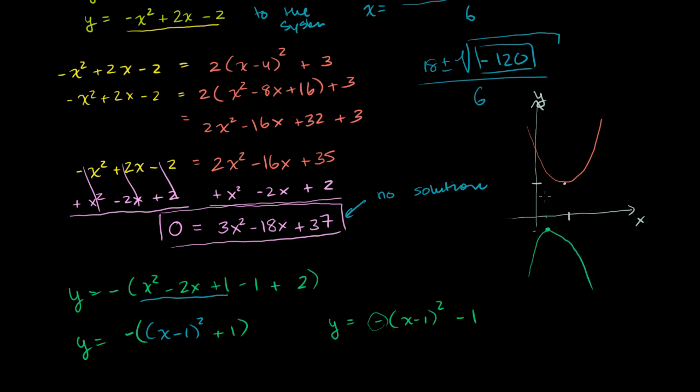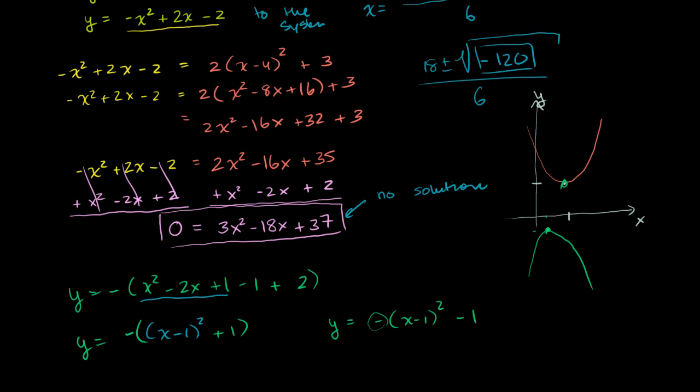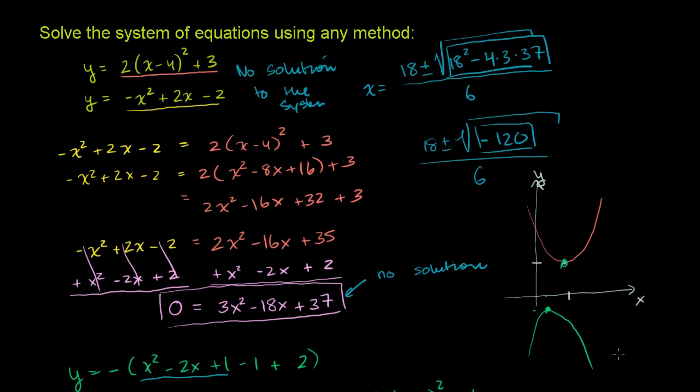So as you see, they don't intersect. This vertex is above it and it opens upward. This is its minimum point, and it's above this guy's maximum point. So they will never intersect. So there is no solution to this system of equations.